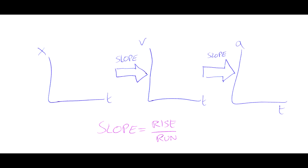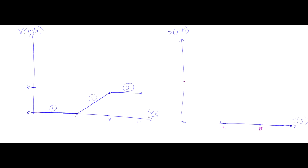Now this question also asked us to draw an acceleration-time graph. The slope of the displacement-time graph gives us velocity, but if we take the slope of the velocity-time graph, we get the acceleration. Section 1 of the velocity-time graph has a zero slope — it's flat. Since it has a zero slope, it must have zero acceleration because the slope of this graph is the acceleration.